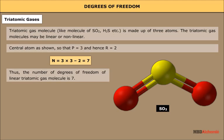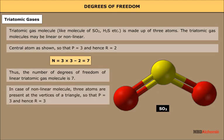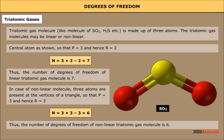For a nonlinear triatomic molecule, three atoms are present at the vertices of a triangle, so P = 3 and R = 3. Therefore, n = 3 × 3 - 3 = 6. Thus the number of degrees of freedom of a nonlinear triatomic gas molecule is 6.